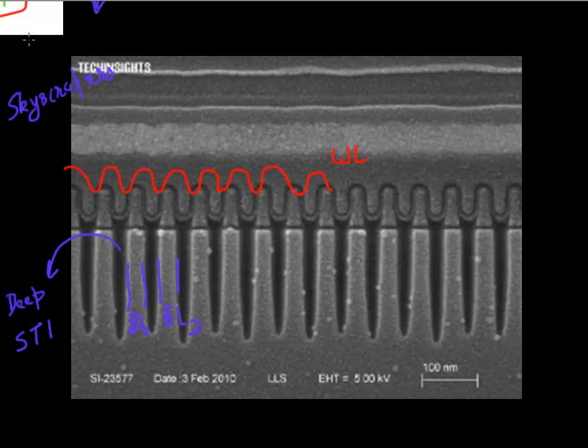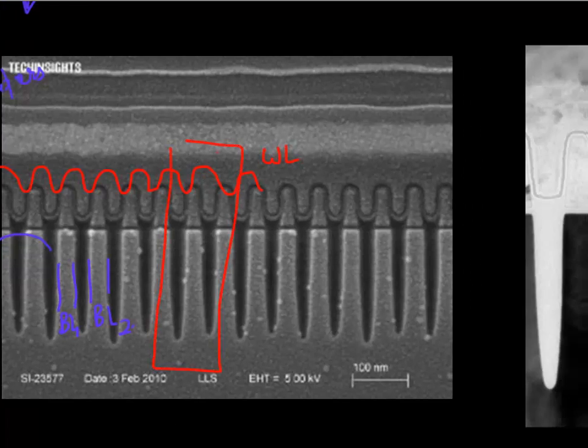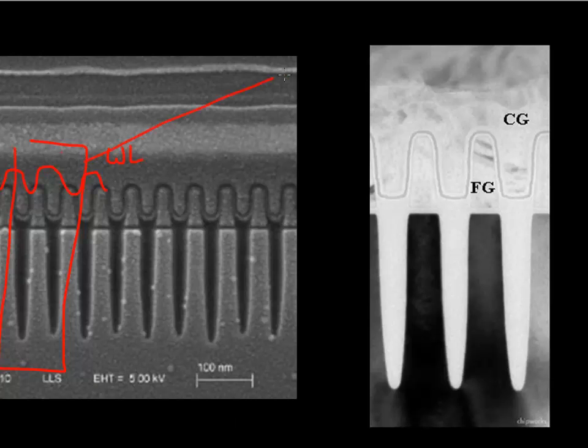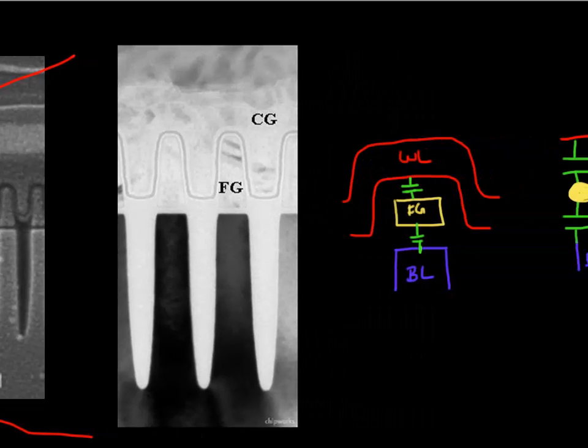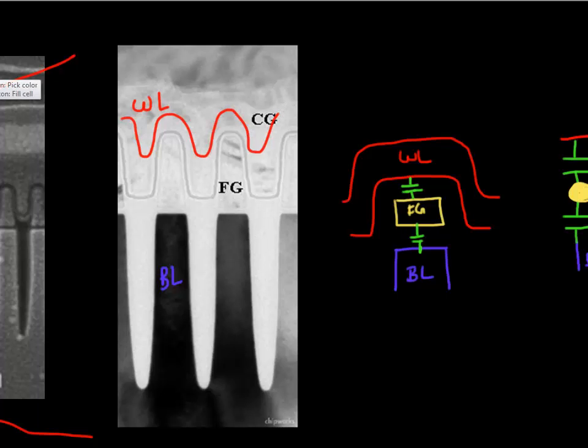And so let's take a closer look at one of these cells. So if we take a closer look at one of these cells, it looks something like this. So you have essentially this is your bit line, and this is again your word line running on top of each other, top of these bit lines. And in between, you have this floating gate, which stores the charge. So it stores the bit.